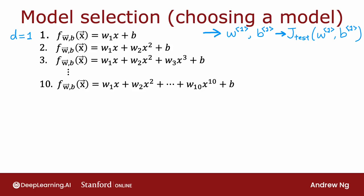You might also consider fitting a second-order polynomial or quadratic model. If you were to fit this to your training set, you would get some parameters w2, b2. You can then similarly evaluate those parameters on your test set and get J test of w2, b2.